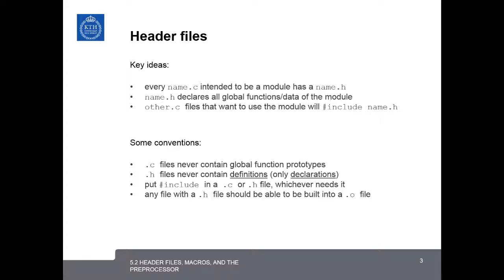Let's begin by reviewing some key ideas and concepts about when and how we should use header files. Whenever we're writing code that we want to use as a module that is shared with other pieces of code, the .c file should have a corresponding header file or a .h file. The .h file declares all the global functions and data from the module. Other .c files that want to use that module will include it with a hash include and then the name .h.